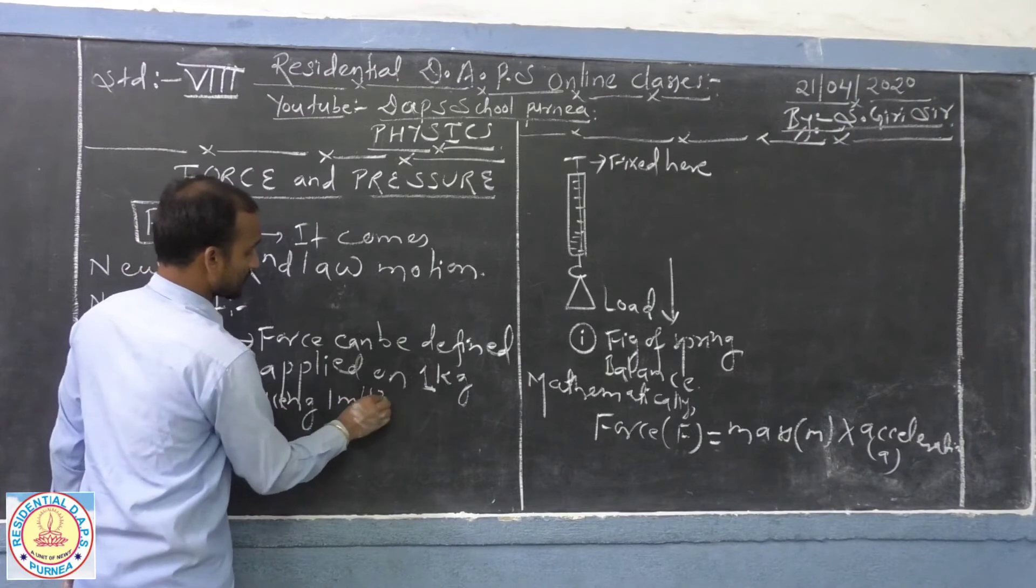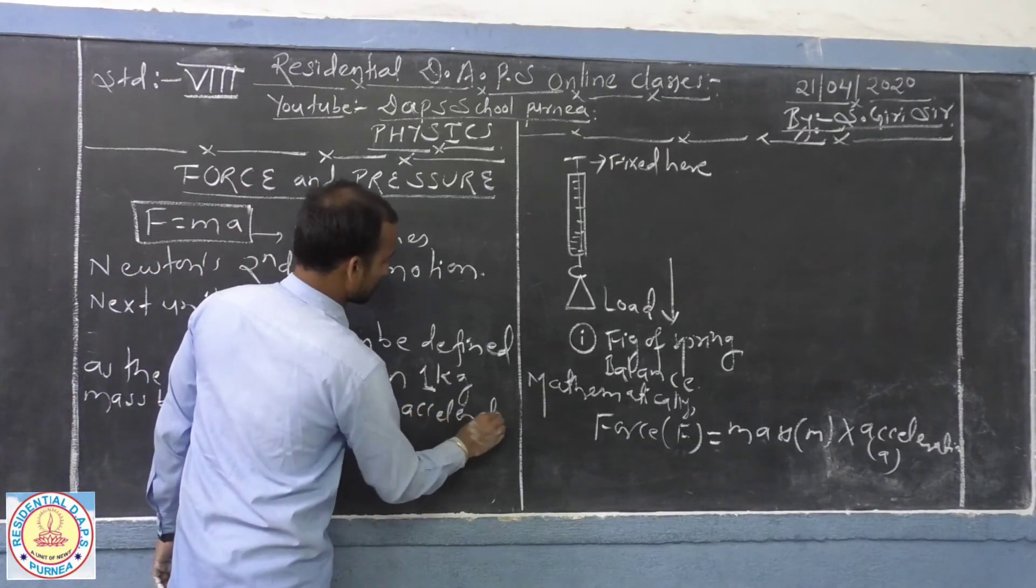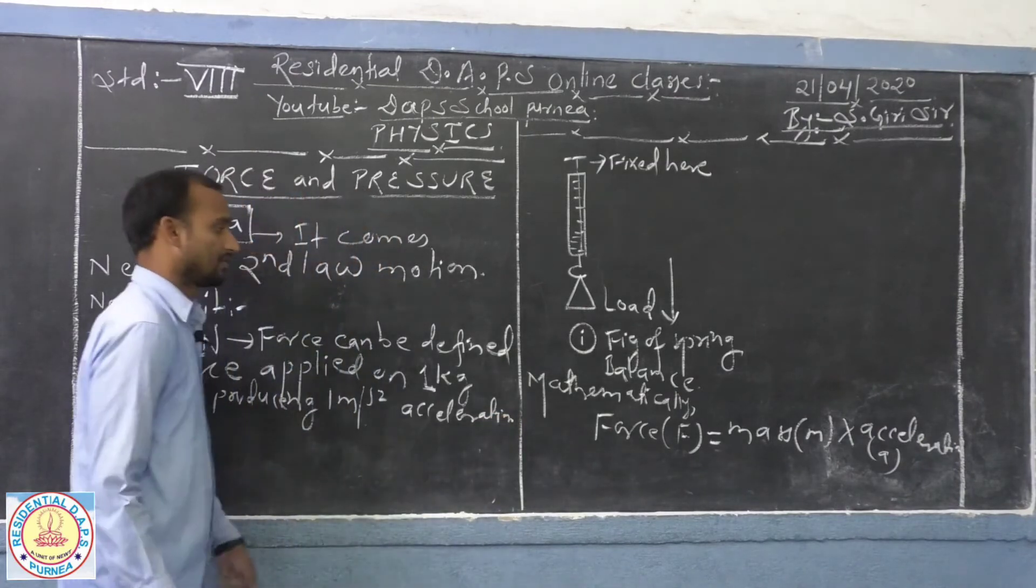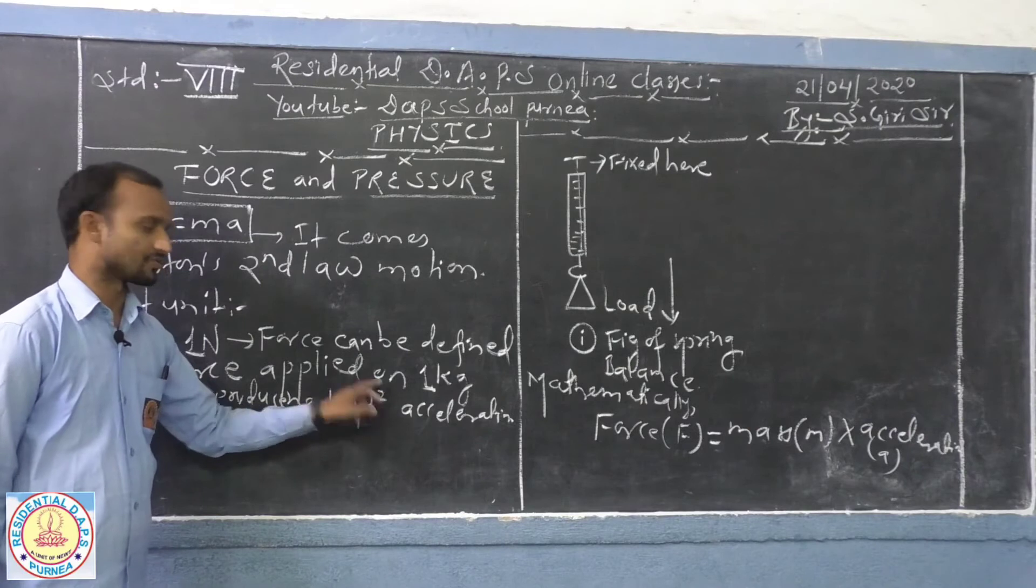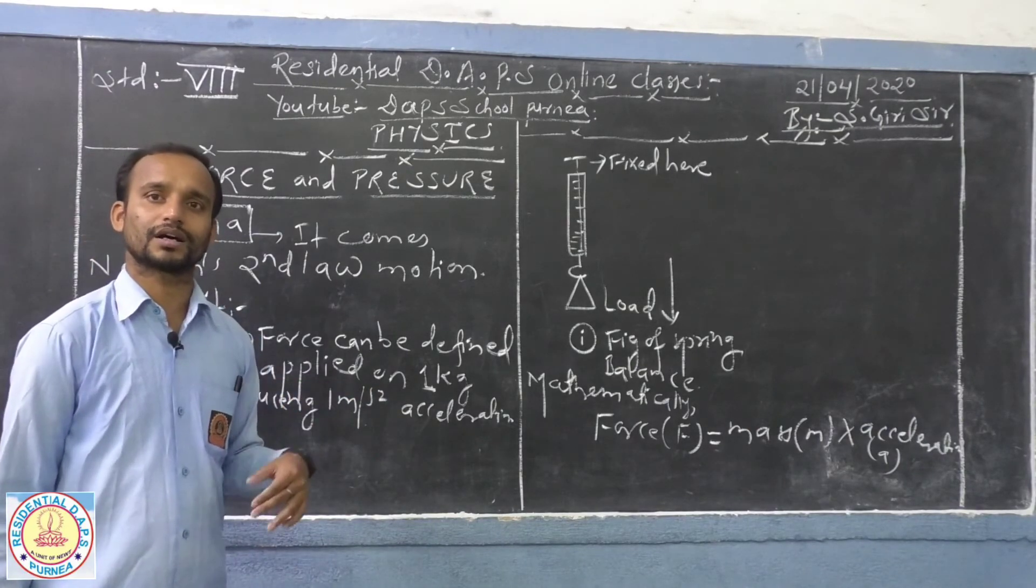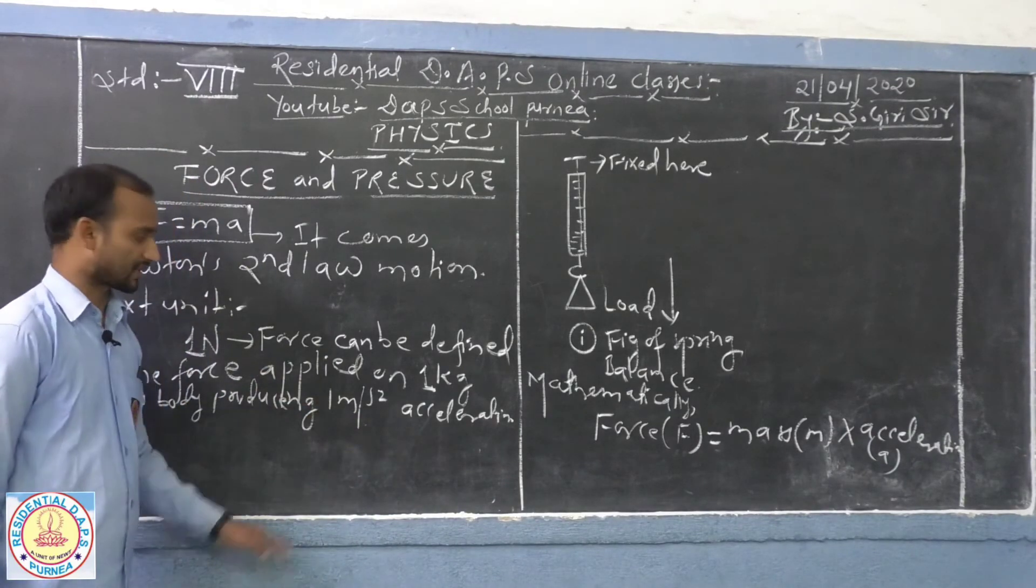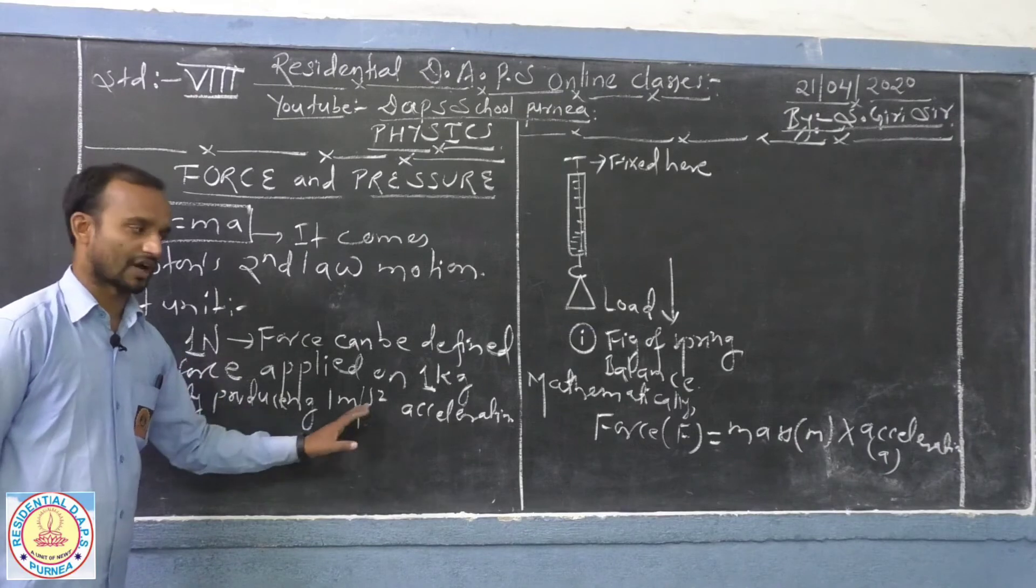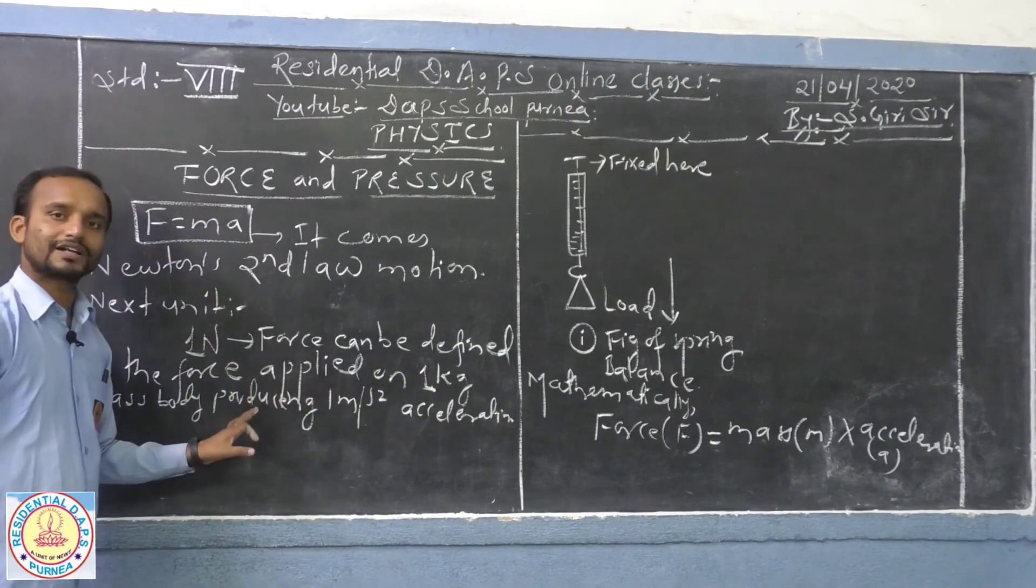If a mass of body is one kg, and when the force is applied on unit mass body, and when it is able to produce one meter per second square acceleration in the direction of the force, at that time the quantity of the force is said to be one Newton force.